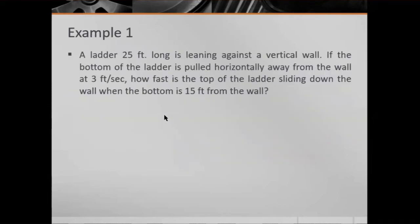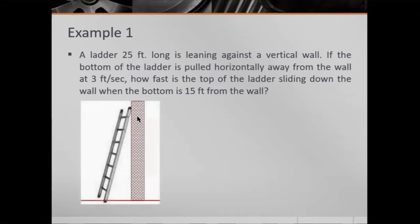Example one: A ladder 25 feet long is leaning against a vertical wall. If the bottom of the ladder is pulled horizontally away from the wall at 3 feet per second, how fast is the top of the ladder sliding down the wall when the bottom is 15 feet from the wall? Here is our sketch of the ladder leaning against the vertical wall — the ladder is 25 feet long.